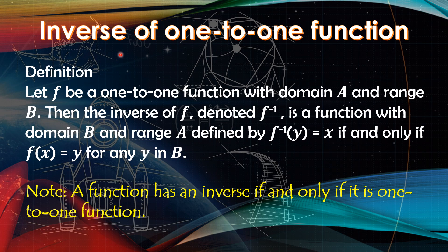What is the inverse of a one-to-one function? Let f be a one-to-one function with domain A and range B. Then the inverse of f, denoted by f raised to negative 1, is a function with domain B and range A, defined by inverse of y equals x, if and only if f of x equals y, for any y in B. A function has an inverse if and only if it is a one-to-one function.